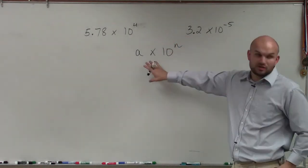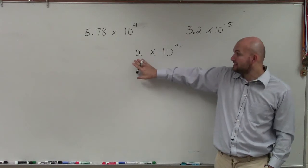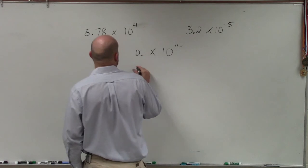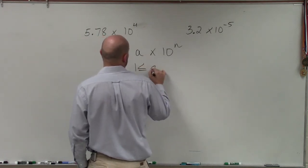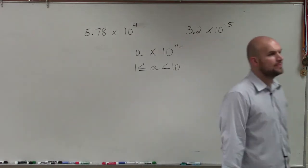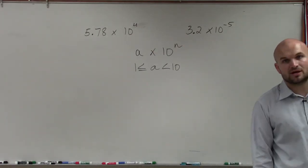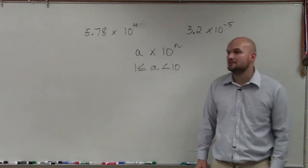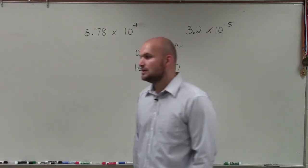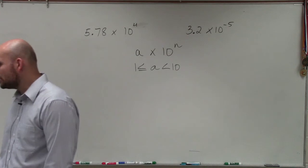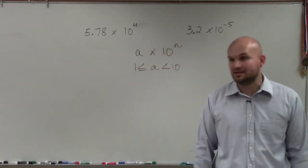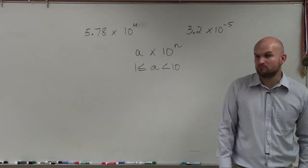So basically, ladies and gentlemen, scientific notation is a times 10 to an nth power, where a is going to be greater than or equal to 1, and less than 10. But it cannot equal 10. So it has to be a number between 1—it can be equal to 1—but between 1 and less than 10. It cannot be equal to 10. This is very, very important.